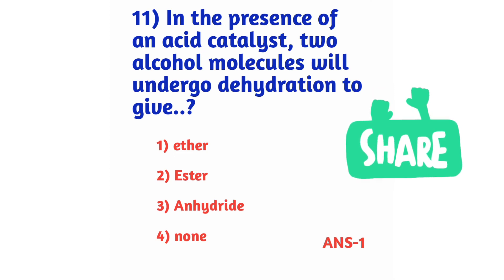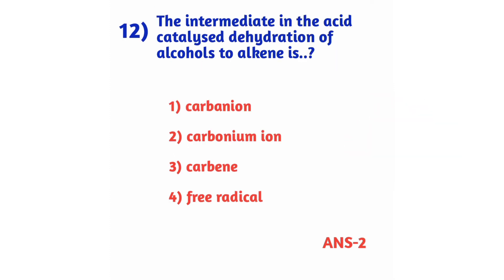Question number 12: The intermediate in the acid-catalyzed dehydration of alcohols to alkene is — option 1: carbon ion, option 2: carbonium ion, option 3: carbene, option 4: free radicals. The right answer is option 2, carbonium ion.